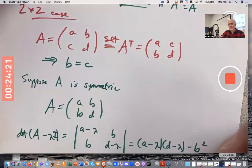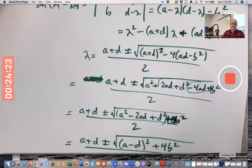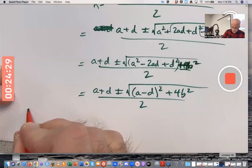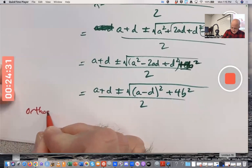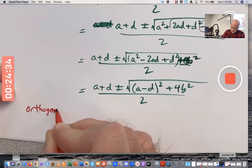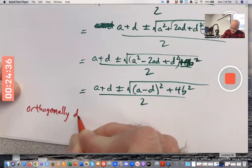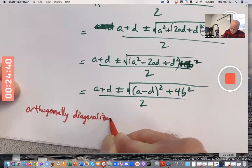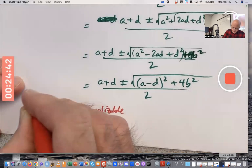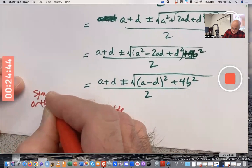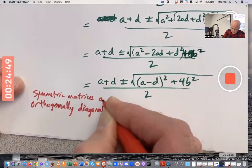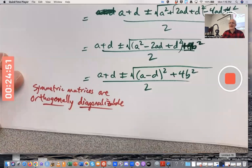Something else significant about symmetric matrices. Symmetric matrices are what's called orthogonally diagonalizable. Symmetric matrices are orthogonally diagonalizable.